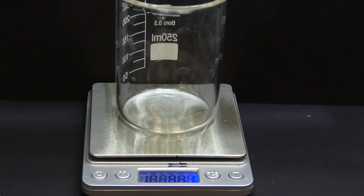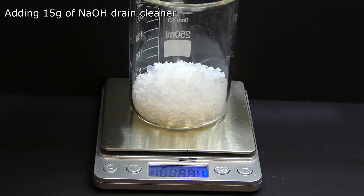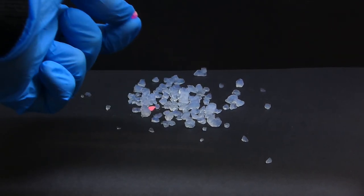To make the reaction, we first need to add 30 grams of the silica gel to a beaker, followed by 15 grams of sodium hydroxide. If you want to make the sodium silicate more pure, you can remove the colored pellets, but in the end, it makes no significant difference.